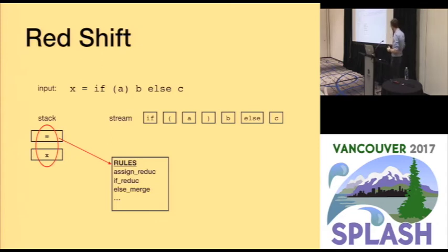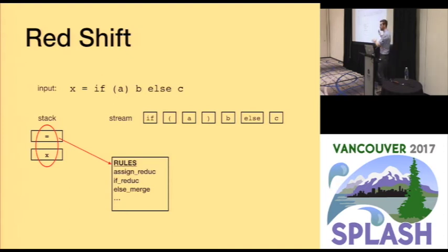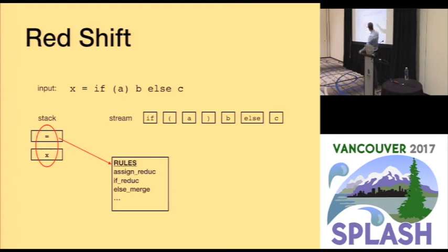Let's take a concrete example. Imagine we're parsing something like C or Java where 'if' is a statement, not an expression. This input is incorrect — doubly so, because the body of the if should also be a statement. I've shifted two tokens onto the stack. In a traditional LR parser this would be the end, because it makes no sense in the language to have an 'if' token after an equals token — the LR table would find no match and stop.